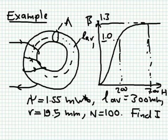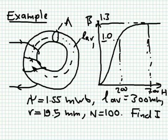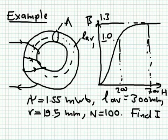We are given the flux and the cross-section area, so we can find B. If I know B, I can go to the BH curve and find H. If I know H and I know the average contour around this circuit, then I know the magnetomotive force: MMF equals HL. And since MMF also equals NI, I can solve for I. From the flux divided by the area, we get the flux density B.